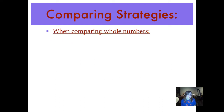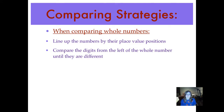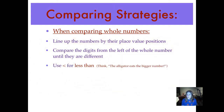Here are our comparing strategies. When comparing whole numbers, line up the numbers by their place value positions. You always line them up by the ones place and then continue to write the number out until you're finished. Compare the digits from the left side of the whole number until you come upon a different digit. As soon as you have a different digit, you compare those two digits, and whichever one is bigger or greater is going to be a part of the greatest number. For the less than symbol, think: the alligator eats the bigger number. The alligator's mouth is open towards the bigger number because it wants to eat it.